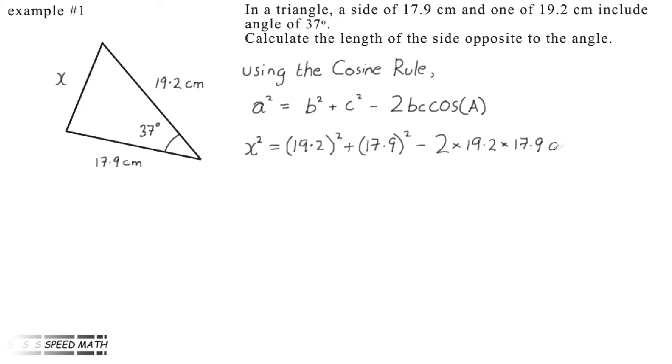Now working that out, we get x² is equal to 368.64 plus 320.4 minus 687.36 times 0.7986, which equals 140.1143.